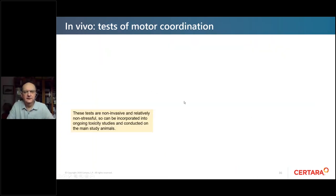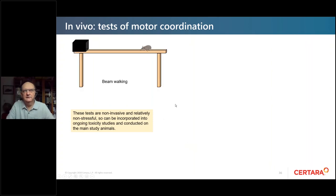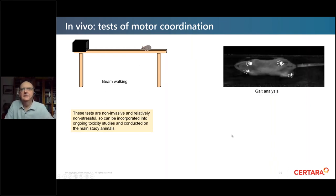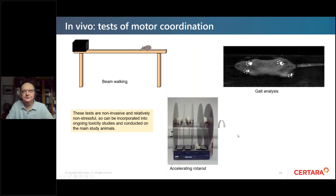Motor coordination can also be assessed. Non-invasive, relatively non-stressful tests include beam walking — rats walk along a beam to a dimly lit box, measuring foot faults and duration — as well as gait analysis providing measures of sway and speed, and the accelerating rotarod where the rat must stay on a rotating rod and the time until falling is recorded. These give very reproducible, quantitative in vivo data that can be correlated with histopathology while also allowing time course tracking.